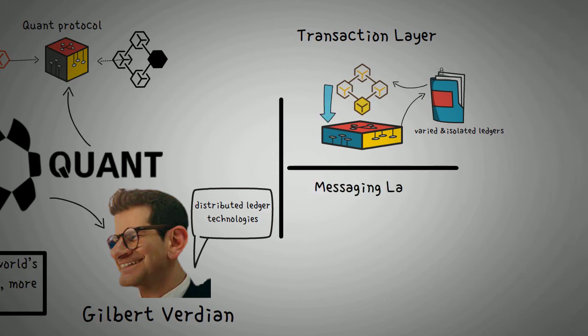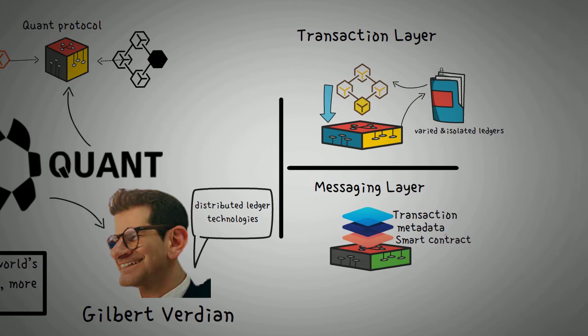Messaging layer: This layer deals with information and data transfer. There are three types of data that can be processed: smart contract data, metadata, and transaction data. Metadata interprets messages and translates them into different languages for different blockchains to understand.